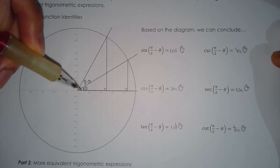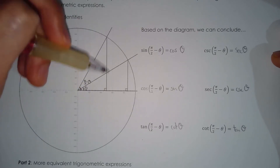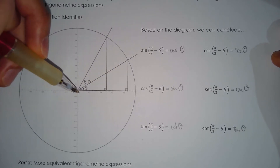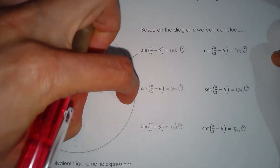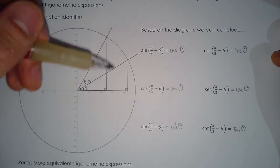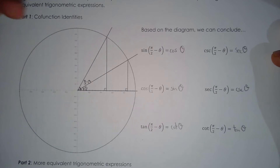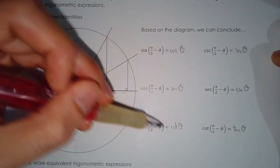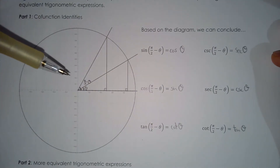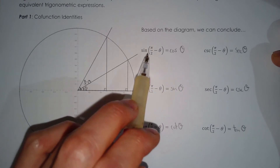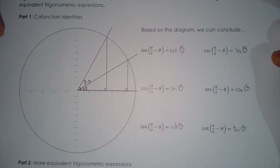Make sure you understand that these two triangles are congruent. If they were not congruent, these lengths would not be the same and the whole relationship falls apart. But because they are congruent, these relationships hold. These six are called the co-function identities, because they allow us to switch from one function to its complementary trig function.